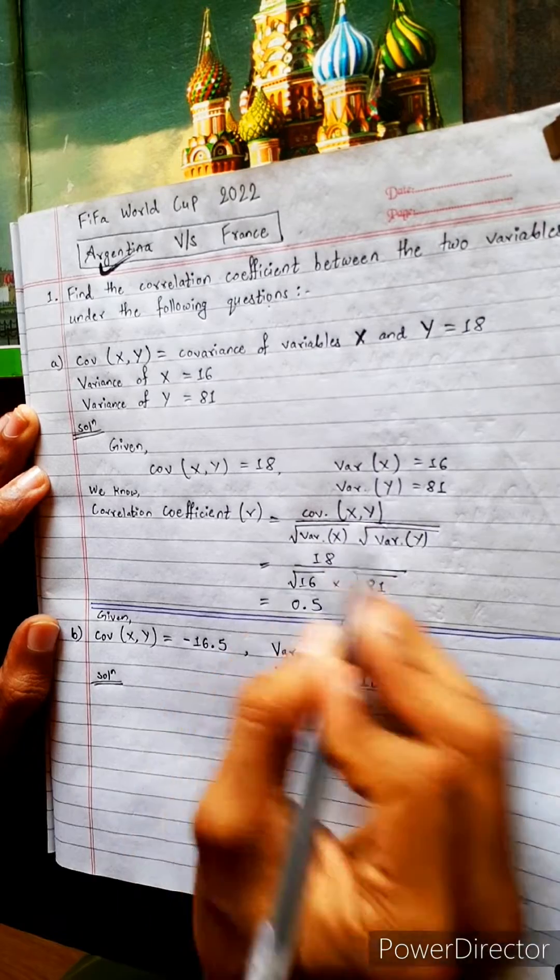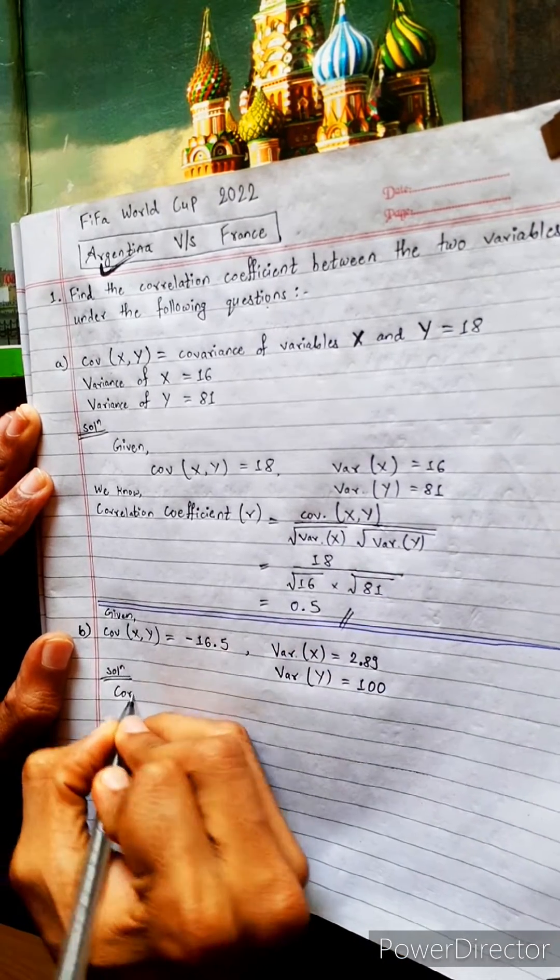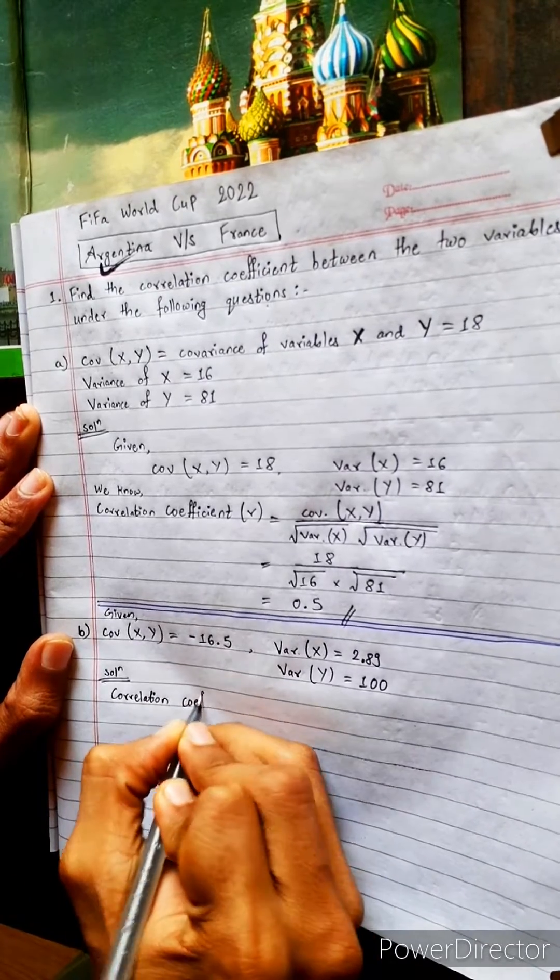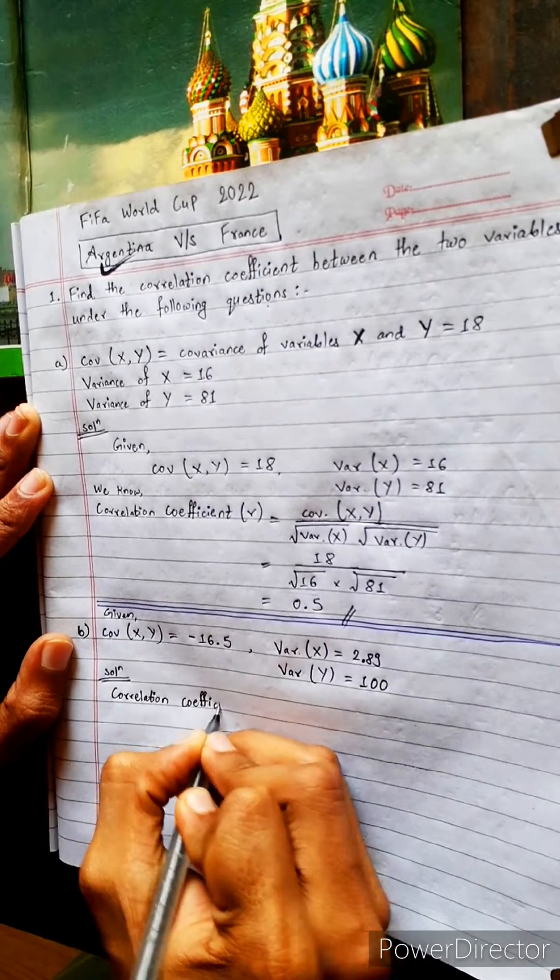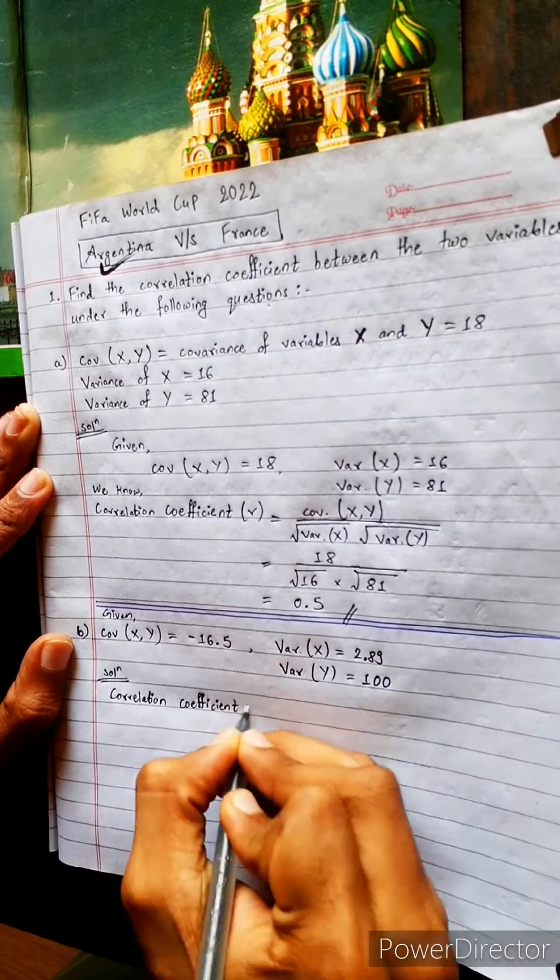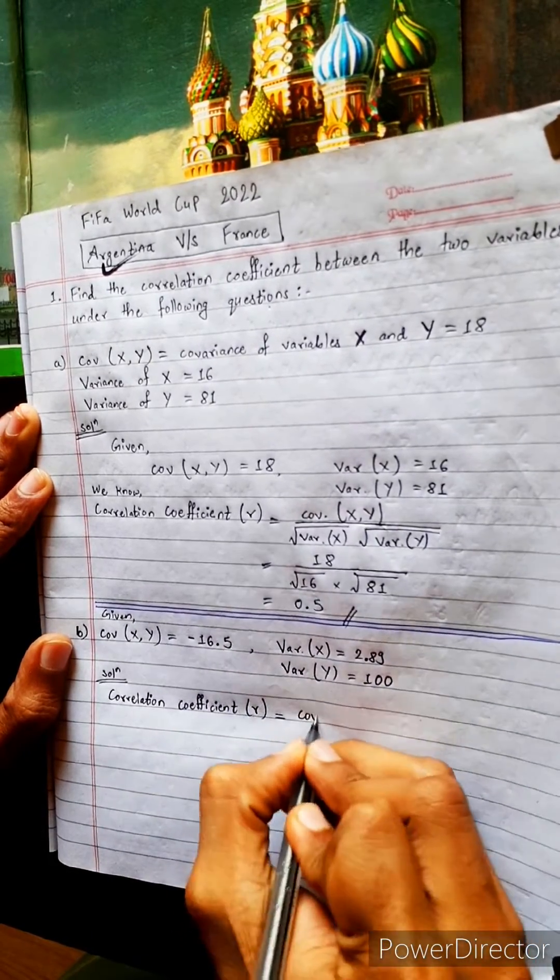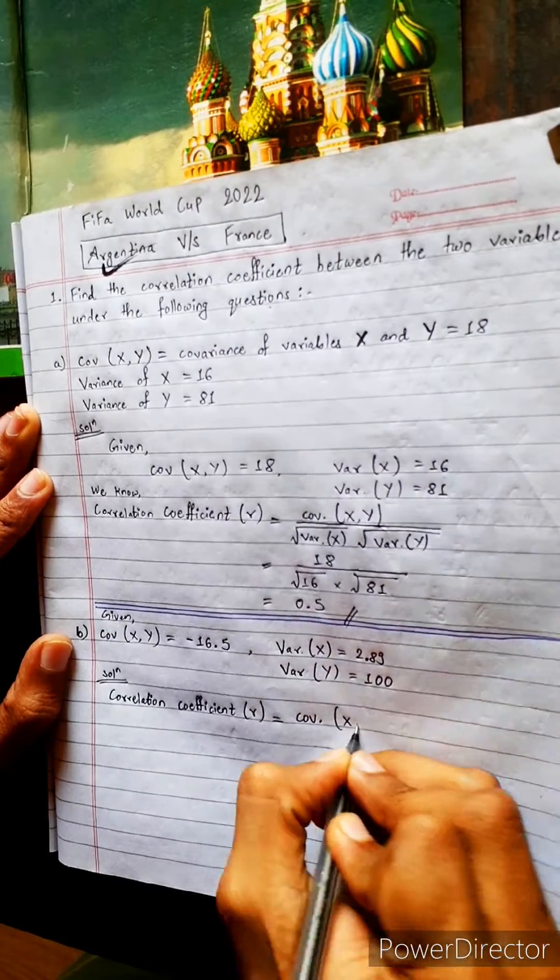Now the formula is the same. Let's find the correlation coefficient. It is represented by small r equals to the same formula. Same question, only the numbers are different.